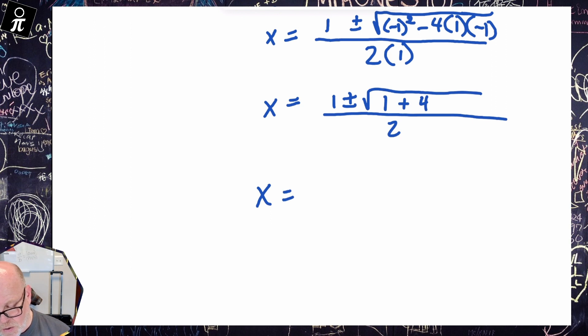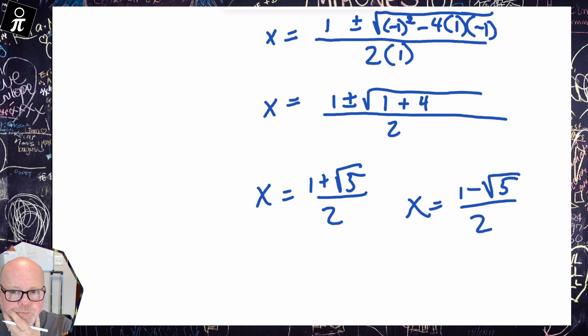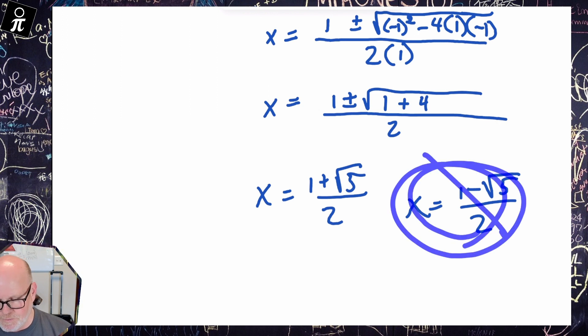So X is equal to, now we can simplify that and say X is either one plus the square root of five over two, or X is equal to one minus the square root of five over two.